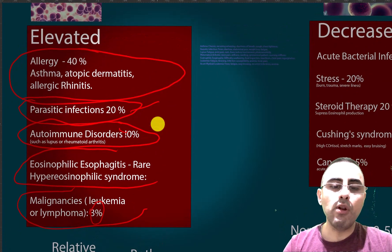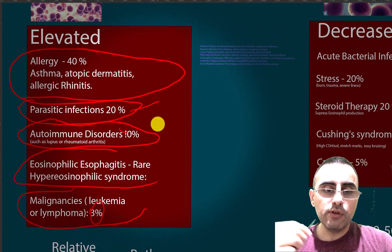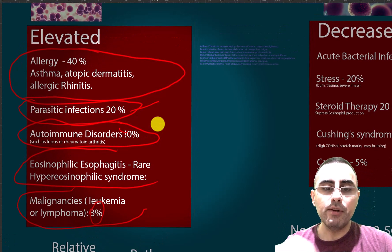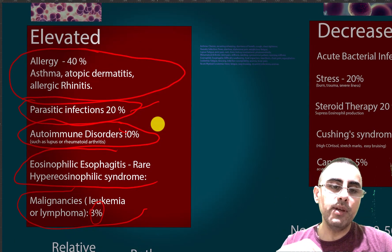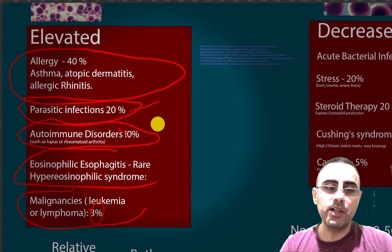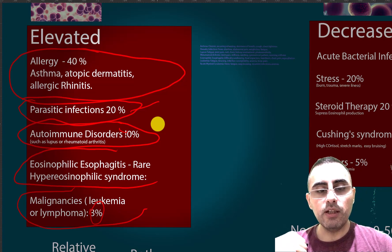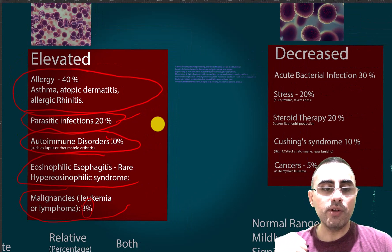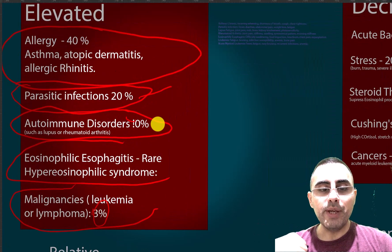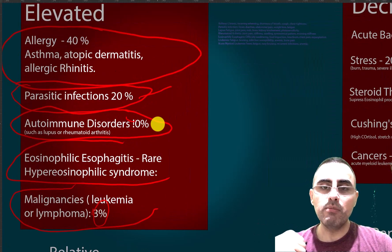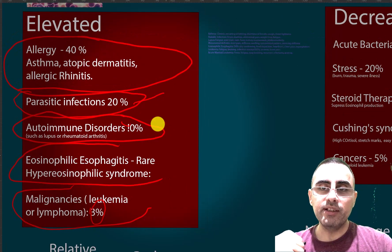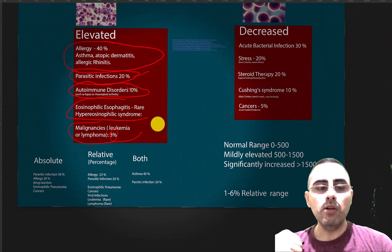If the person has difficulty swallowing food, food impaction, regurgitation, or heartburn, it can be eosinophilic esophagitis. If the person has unexplained weight loss or a weak immune system — such as recurrent infections, easy bruising, or bleeding — it can be malignancies.